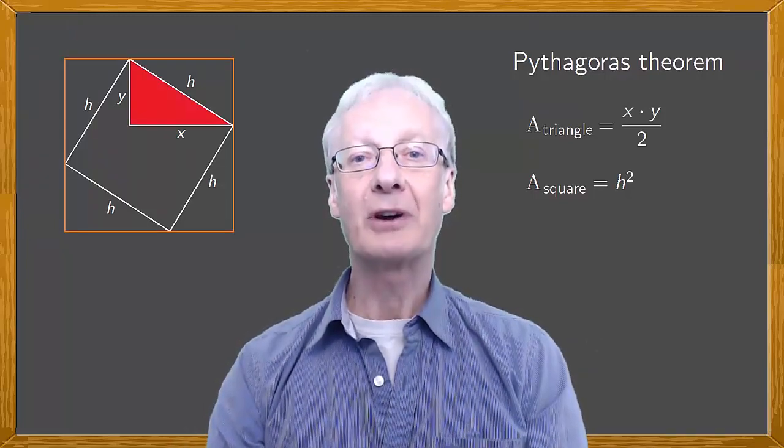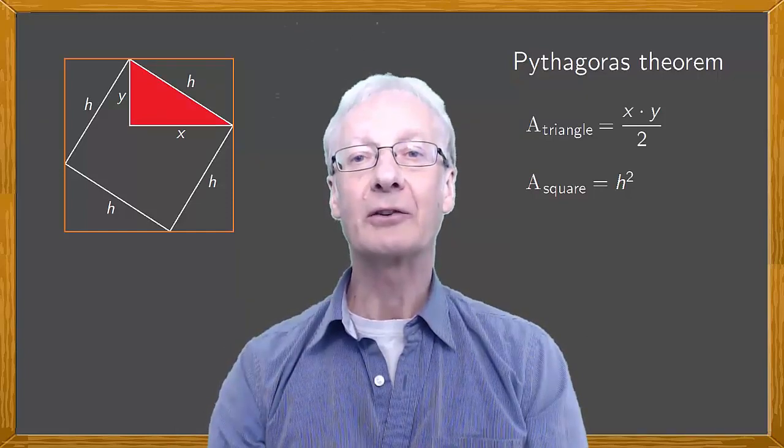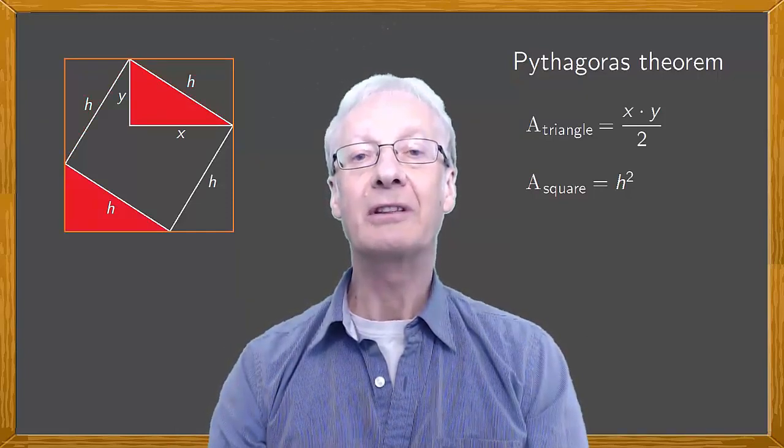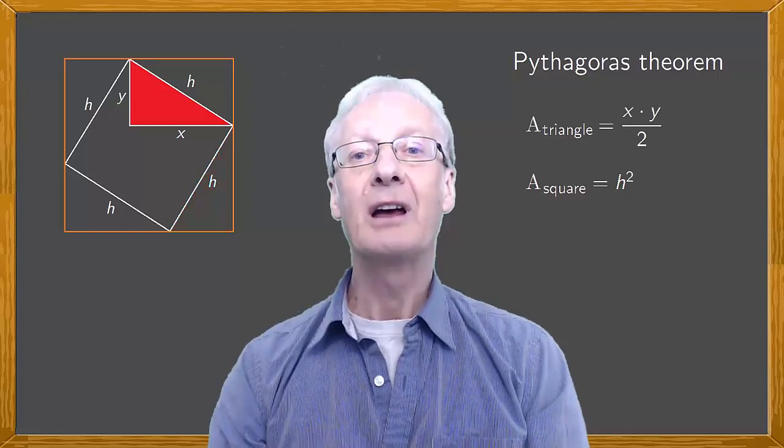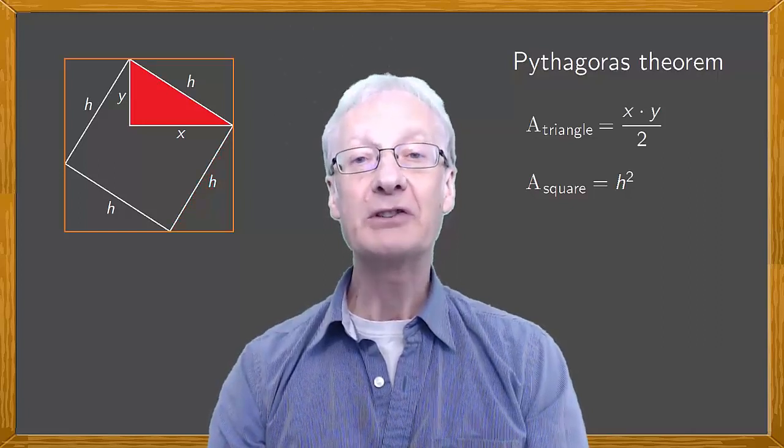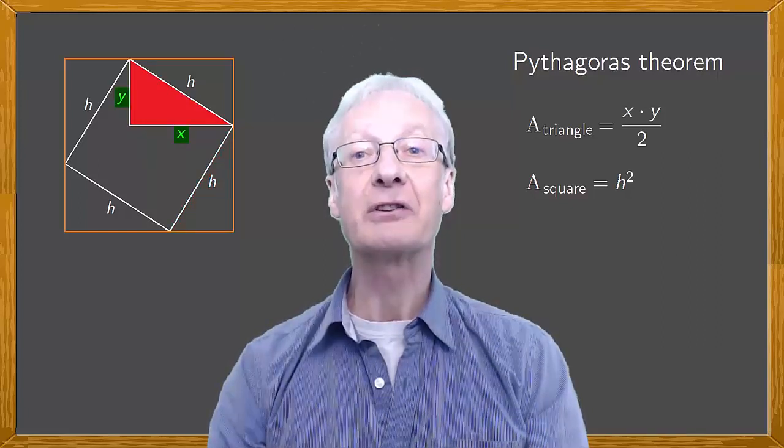Look at our original triangle. These right triangles we've drawn, this, this, this, and this, are all the same as the original, so that the dimensions coincide.